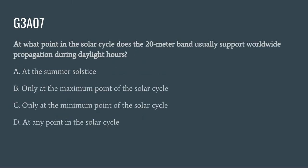G3A07: At what point in the solar cycle does the 20 meter band usually support worldwide propagation during daylight hours? A. At the summer solstice. B. Only at the minimum point of the solar cycle. C. Only at the maximum point of the solar cycle. Or D. At any point in the solar cycle. The correct answer is D: at any point in the solar cycle.